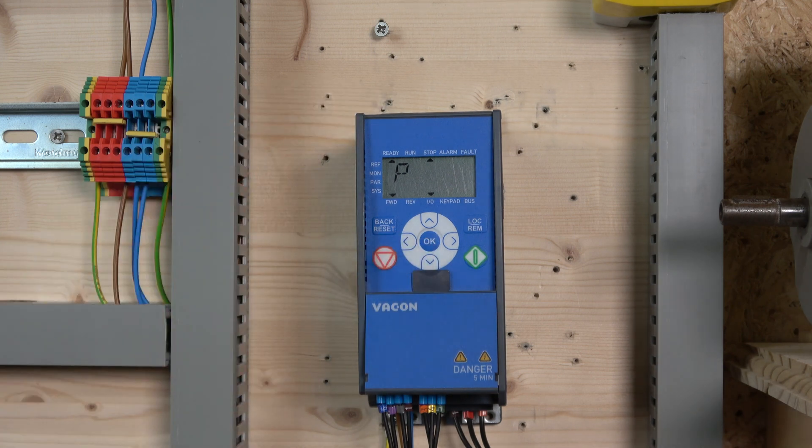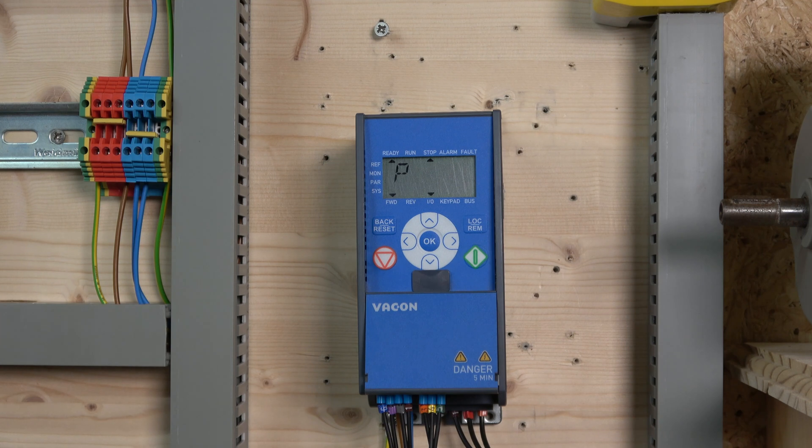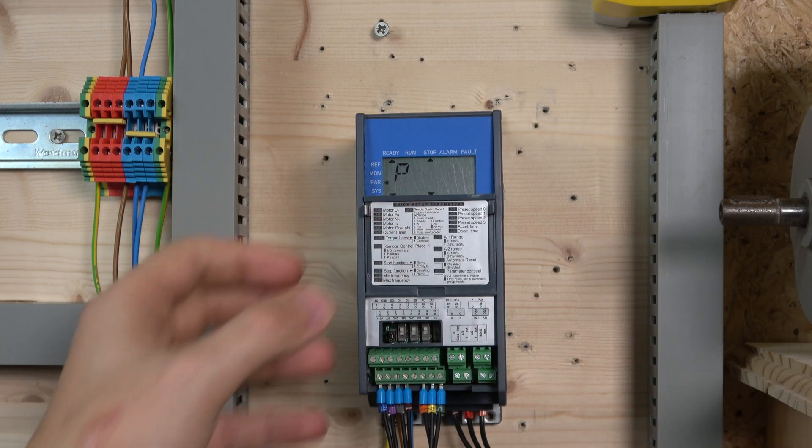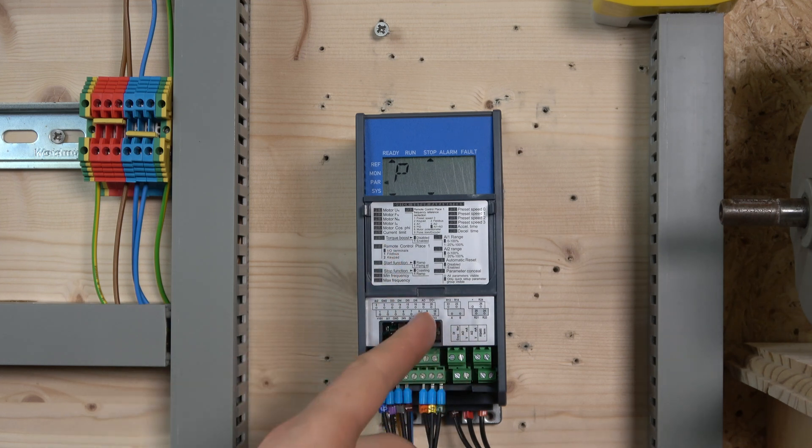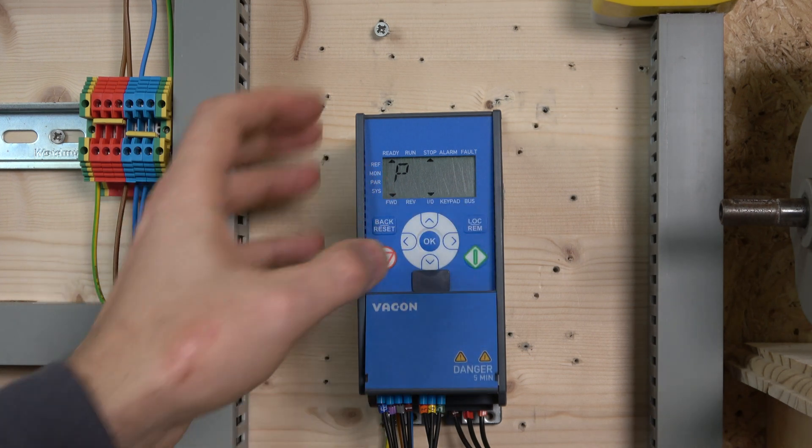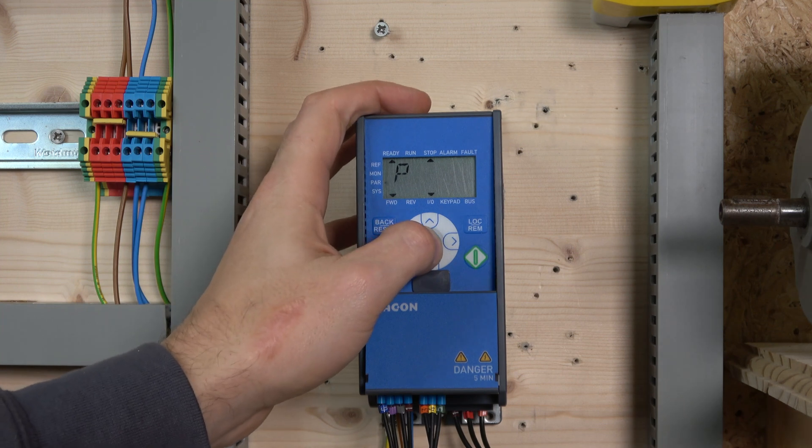For the I/Os, by default the first preset is in parameter P3.1, set to the fourth terminal. If you want to do exactly the same without changing what I'm about to show, just use terminal four - count one, two, three, four. You don't have to change anything. To change the preset frequency, go to parameter 3.5.